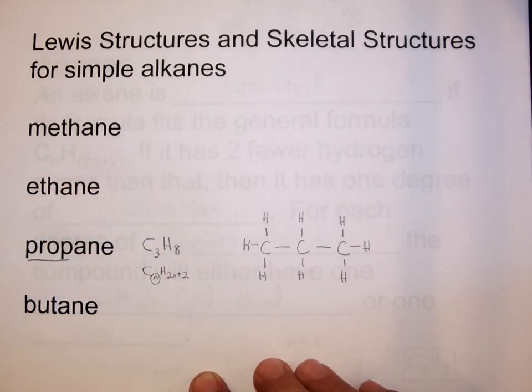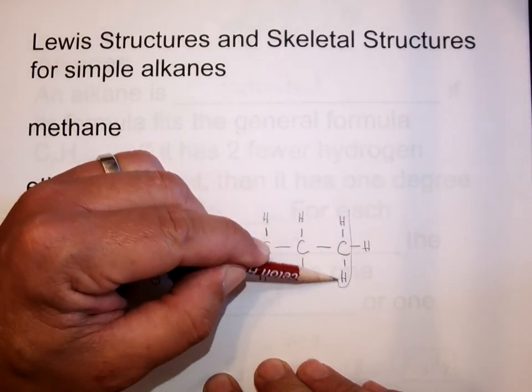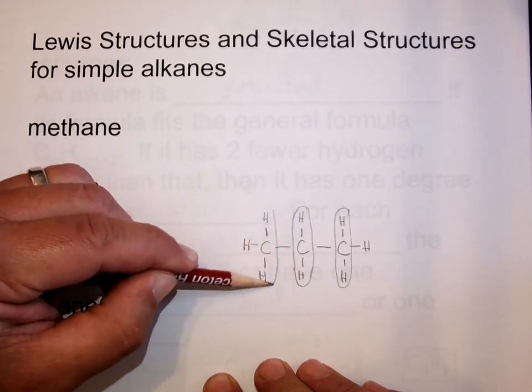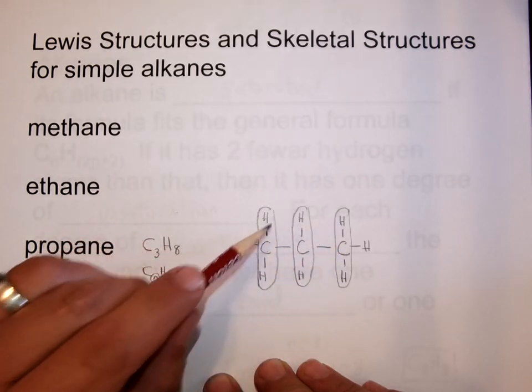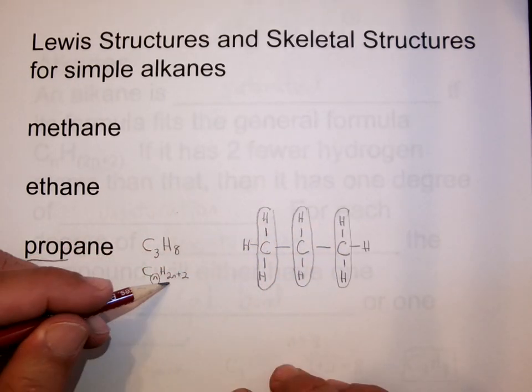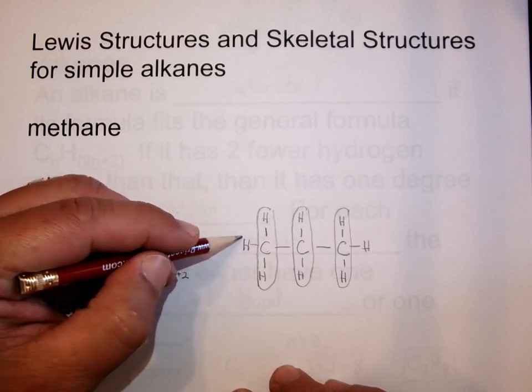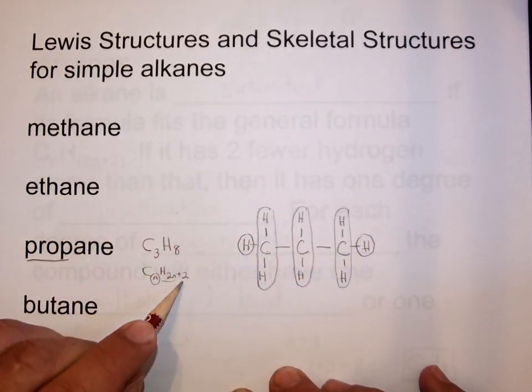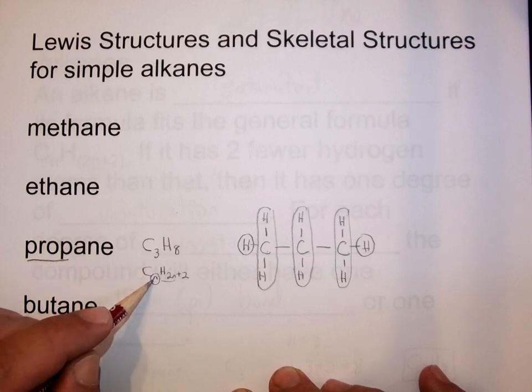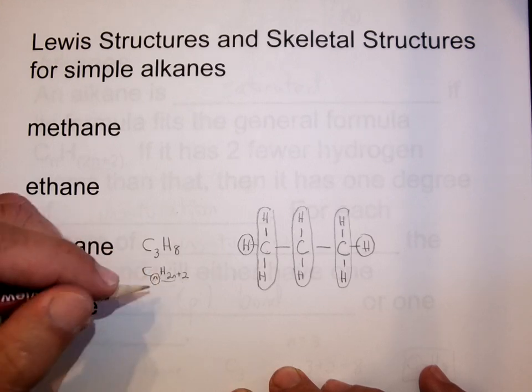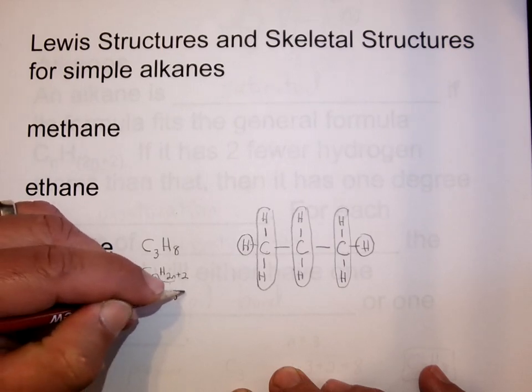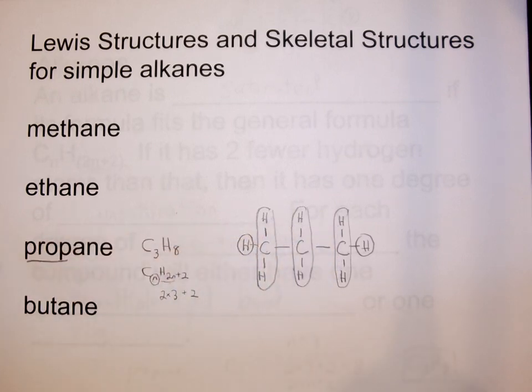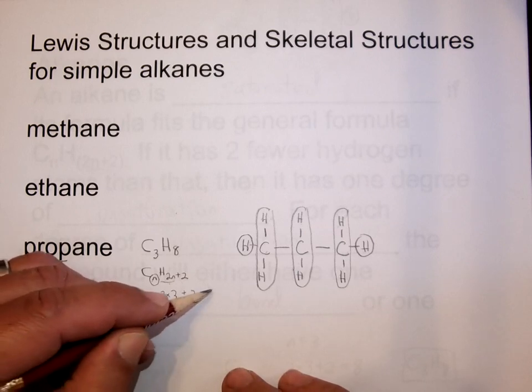And where the 2n plus 2 formula comes from is each carbon here has two hydrogens attached to it. So for every carbon, there's two hydrogens. That's where the H2n comes from. But then the end carbons have additional hydrogens on it, and since there's two ends, that's the plus 2. So C3 means n equals 3, and now if you go 2n plus 2, 2 times 3 plus 2 is 8. So the 2 times 3 is the six hydrogens, two for each carbon, and then plus 2 for the ends equals 8.